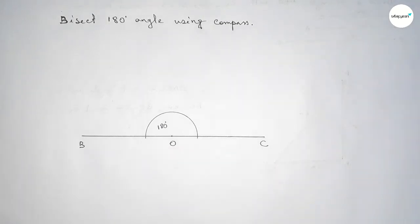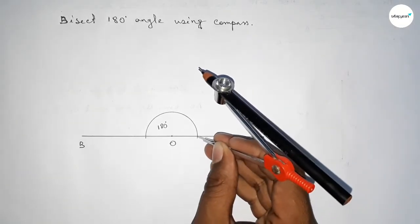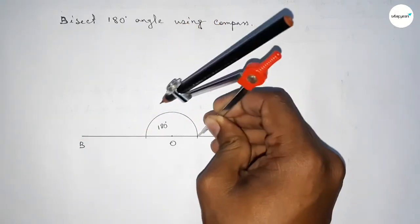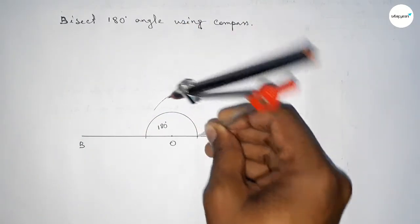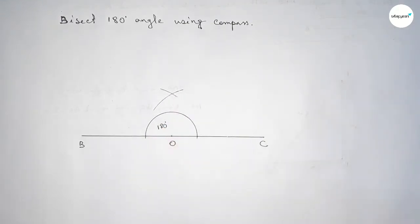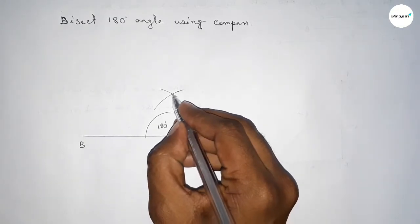Now we have to bisect this 180 degree angle. So putting the compass here and taking any length by this way and drawing an arc here. Again with the same length, putting the compass here and cut here. Okay, so both the curves intersect at a point.